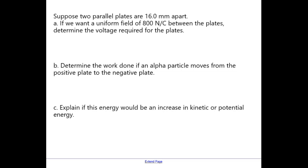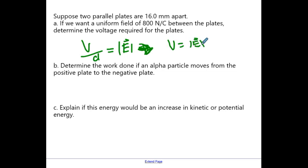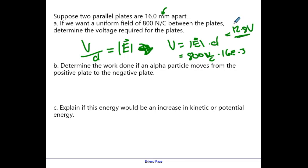Let's try some more math examples. We have two parallel plates that are 16 millimeters apart and we know the field we want — find the voltage. We just learned that field strength equals voltage divided by distance. Rearranging, voltage equals field strength times distance. So it's going to be 800 N/C multiplied by 16 × 10⁻³ meters (converting millimeters to meters). That gives an answer of 12.8 — so we need 12.8 volts, roughly a car battery.